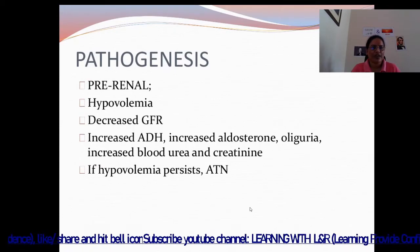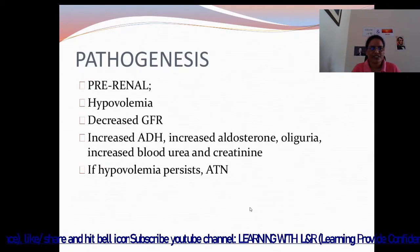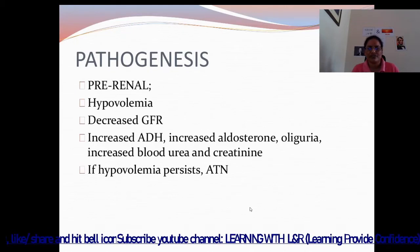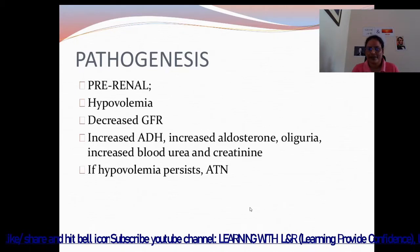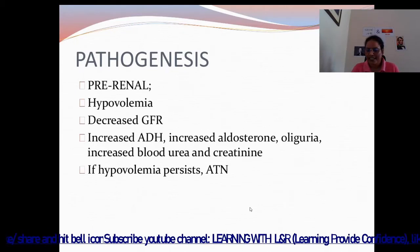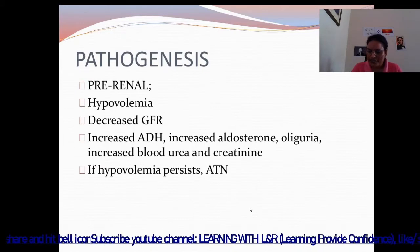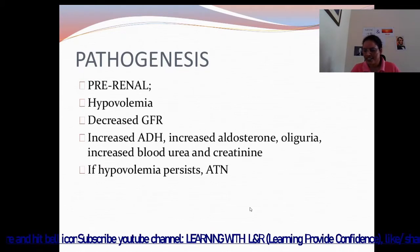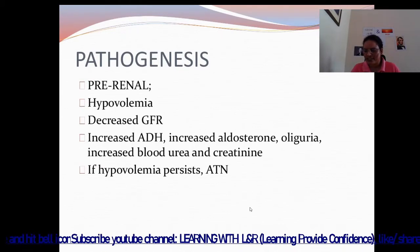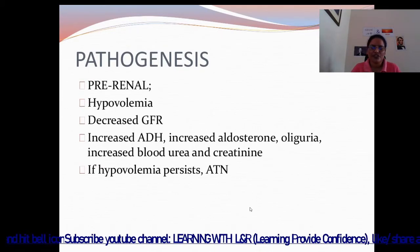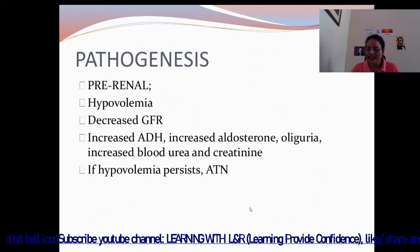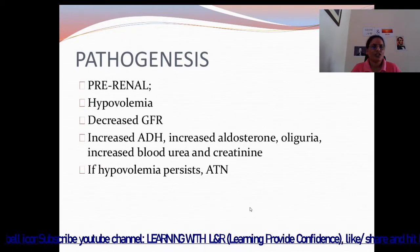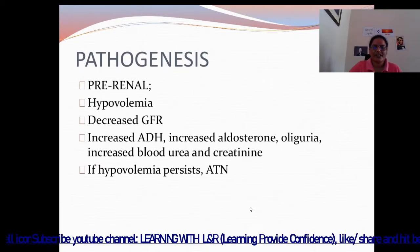If hypovolemia is persistent — continuous for a long time — ATN occurs. Acute tubular necrosis is a condition involving the death of tubular epithelial cells that form the renal tubules of the kidney.